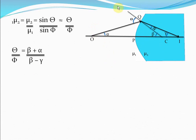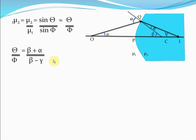From 10th class geometry, beta plus alpha plus angle OQC equals 180 degrees, and theta plus angle OQC is also 180 degrees, so theta equals alpha plus beta. Similarly, phi will be equal to beta minus gamma, because phi plus gamma equals beta — so phi equals beta minus gamma, again by 10th class geometry.